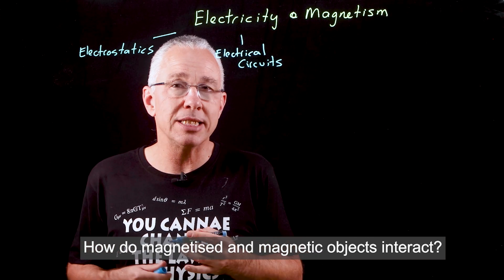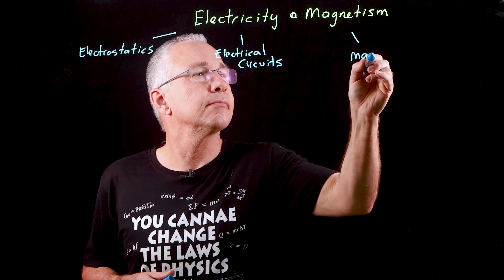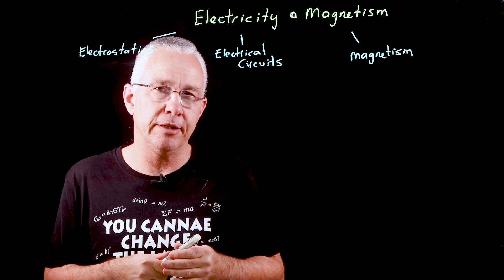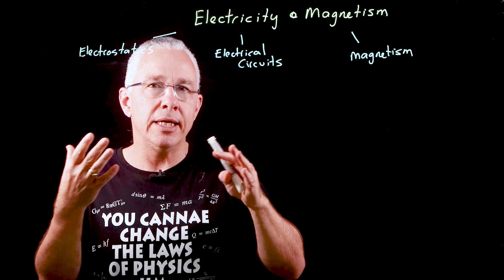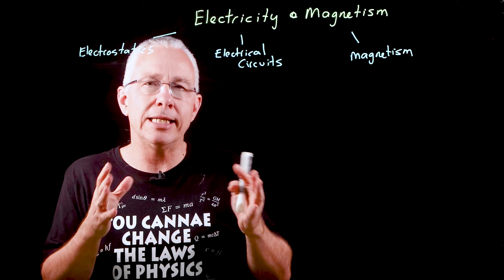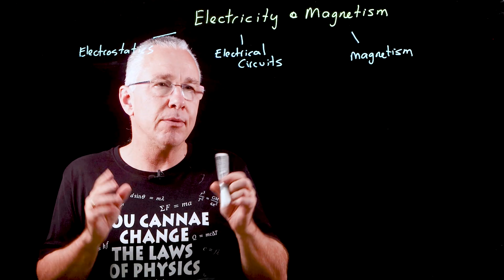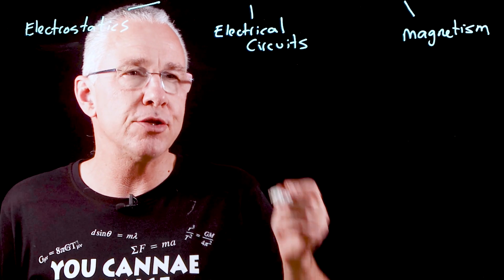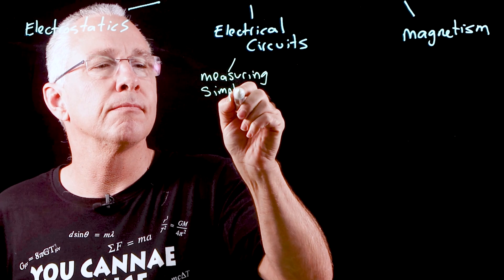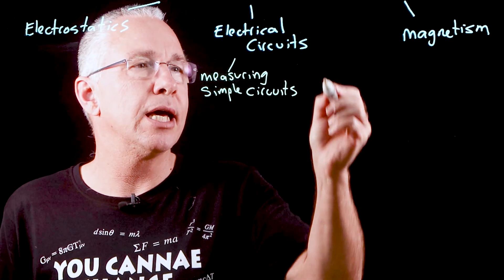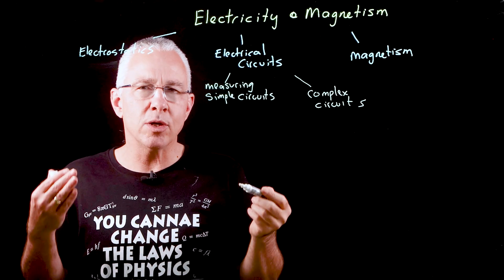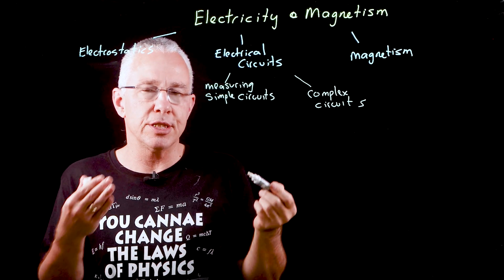Now that we have an understanding that charges move within electric fields, we look in a simplified way at electrical circuits. We want to look at two situations: how we measure electrical circuits, and then expand on that to look at what we refer to as complex circuits.